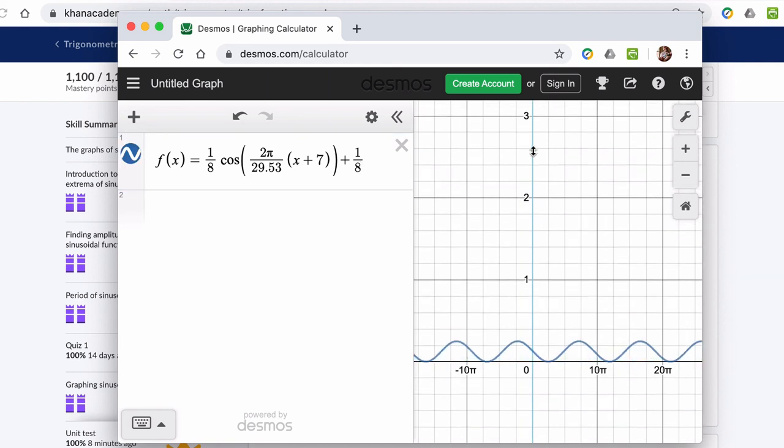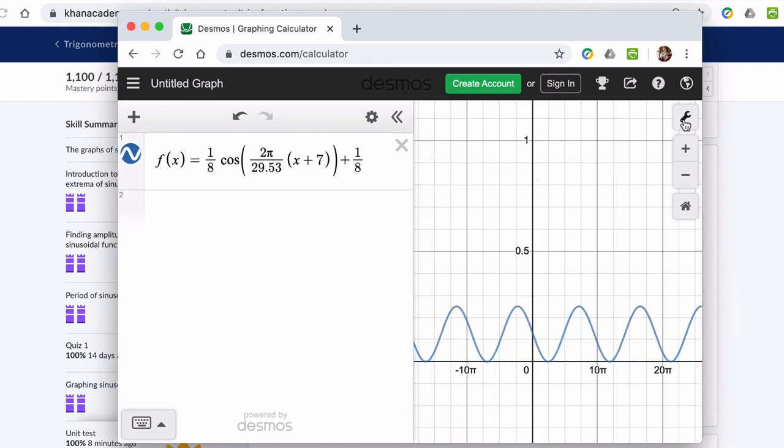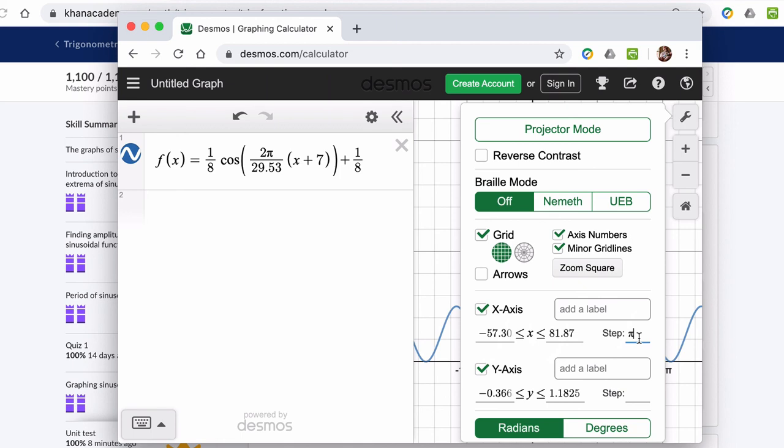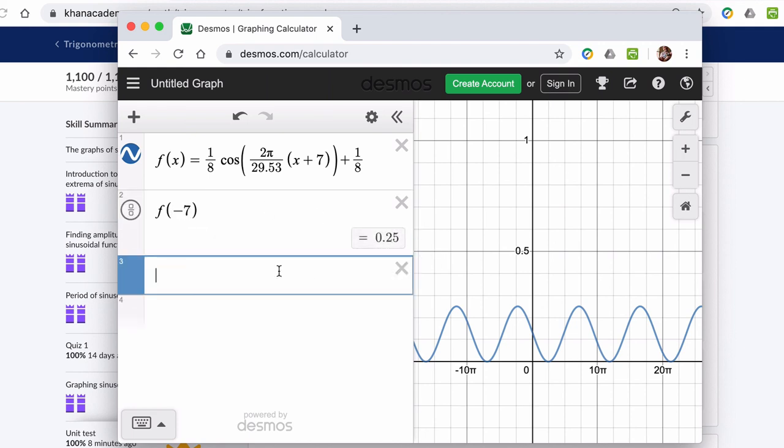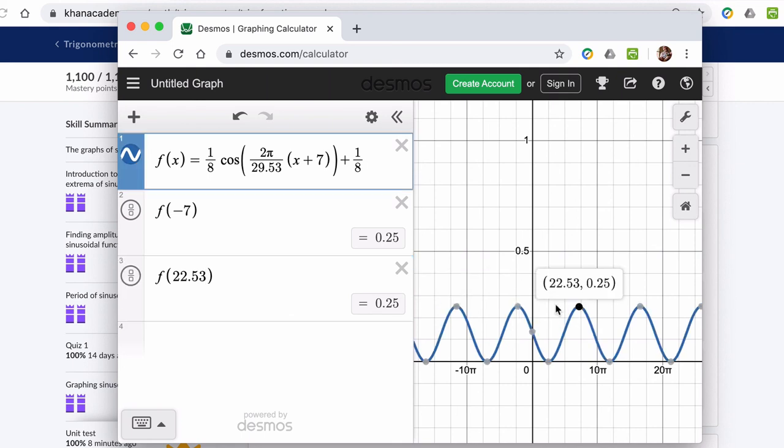Now, this is hard to see. I can hit shift and zoom by dragging. I can go press the gear and type in the pi symbol for my steps. But I'm just going to type in f of 0. Excuse me, f of negative 7. Because I should get 0.25, and I do. And f of 22.53 should go back up to 0.25. Those are these points here. And here, that's one full cycle of our cosine wave. So it checks out.